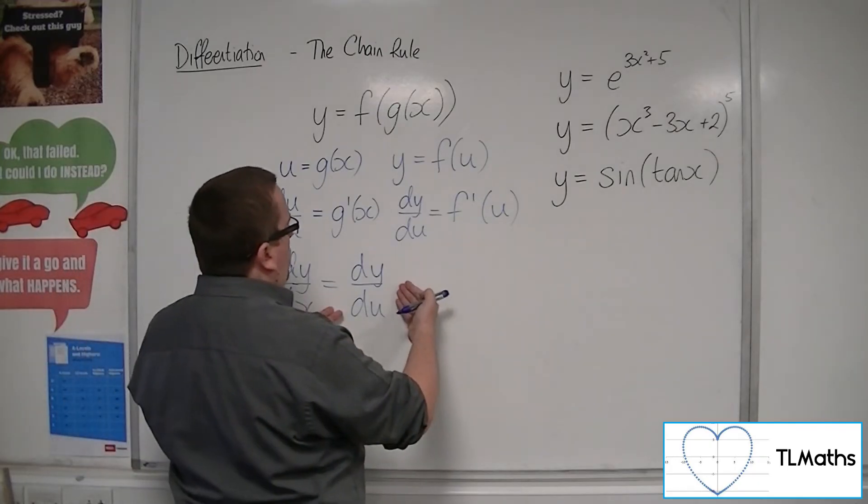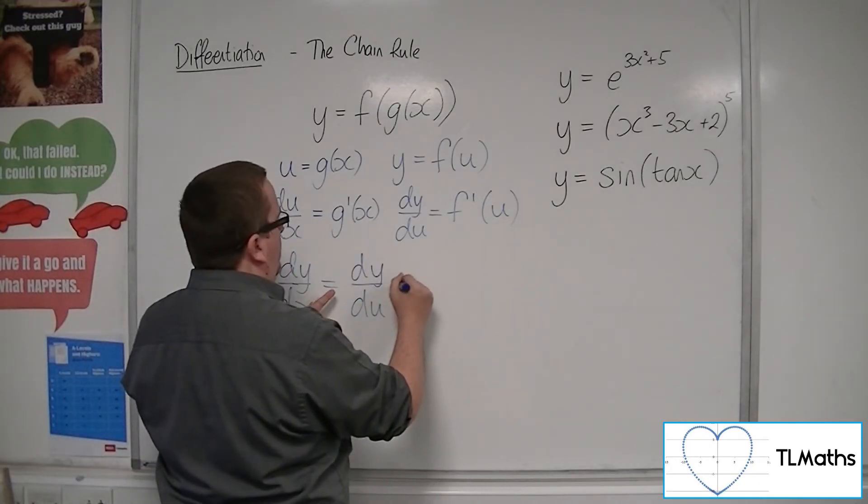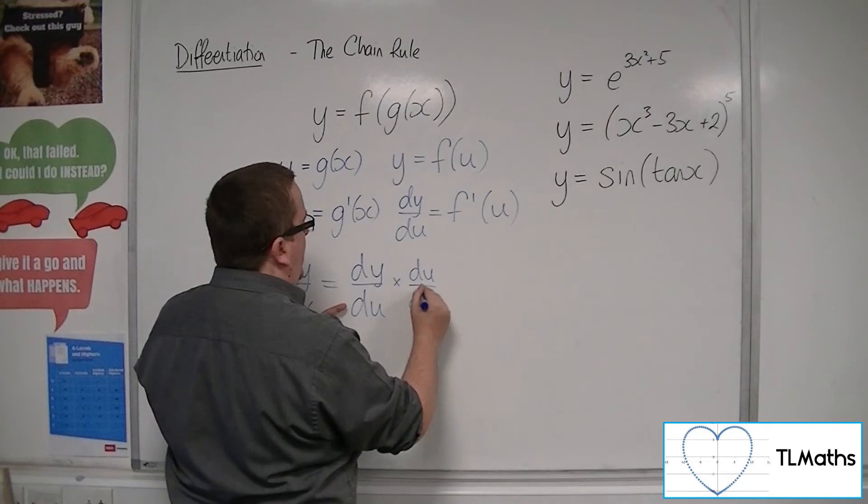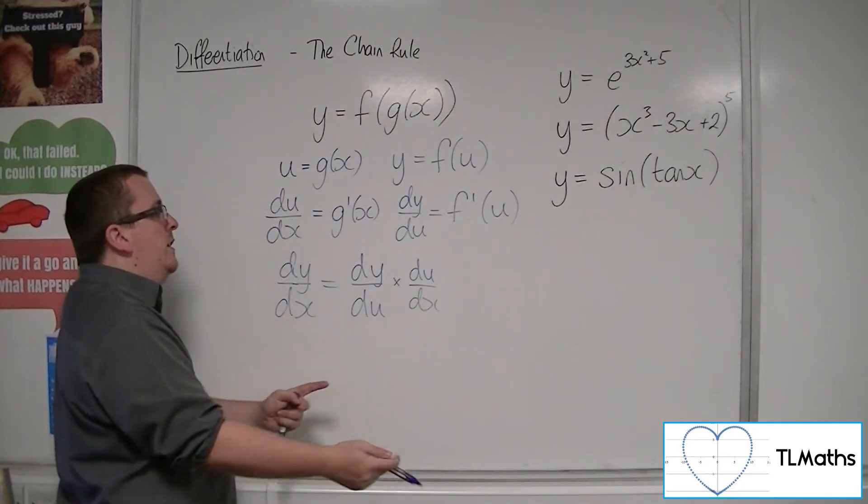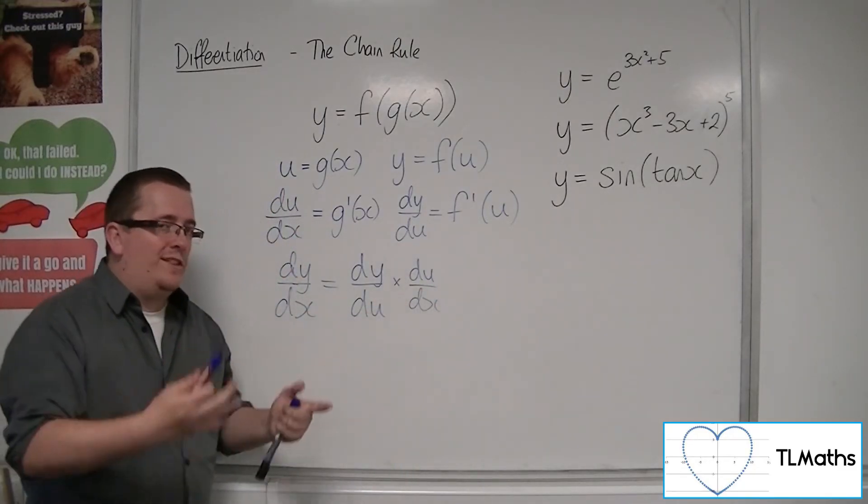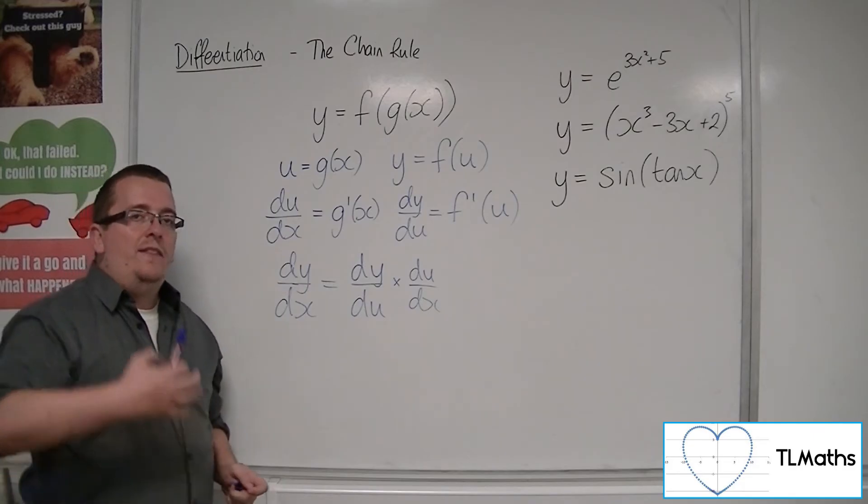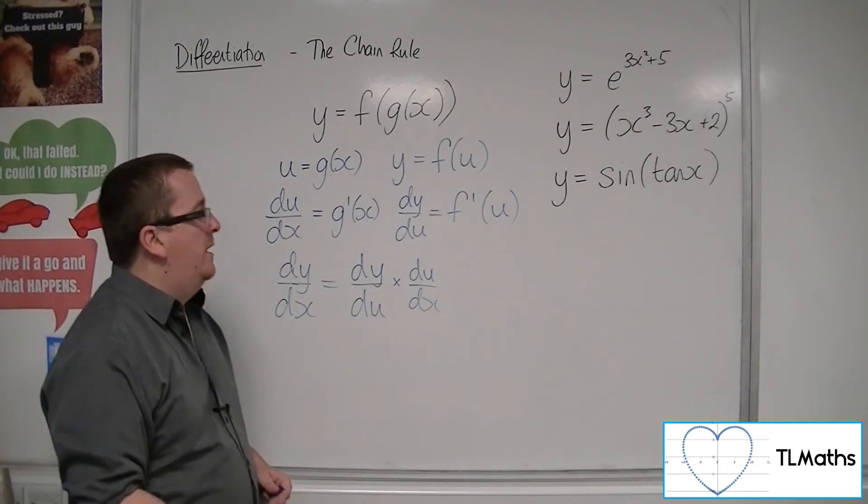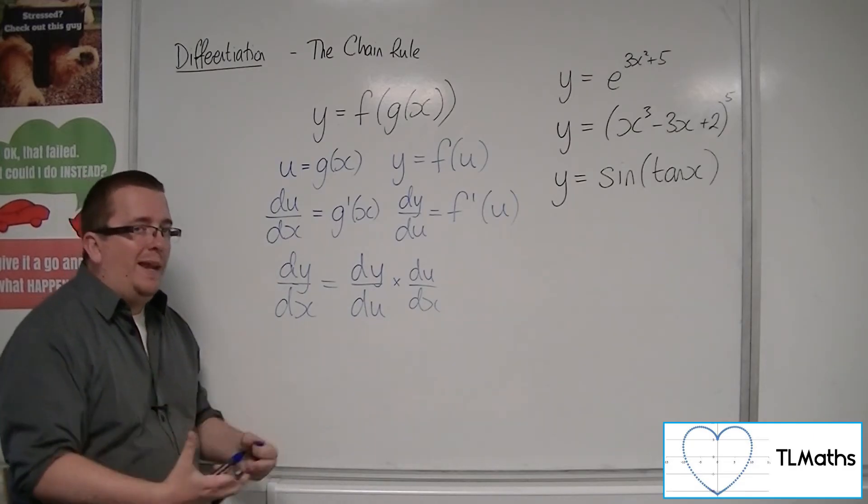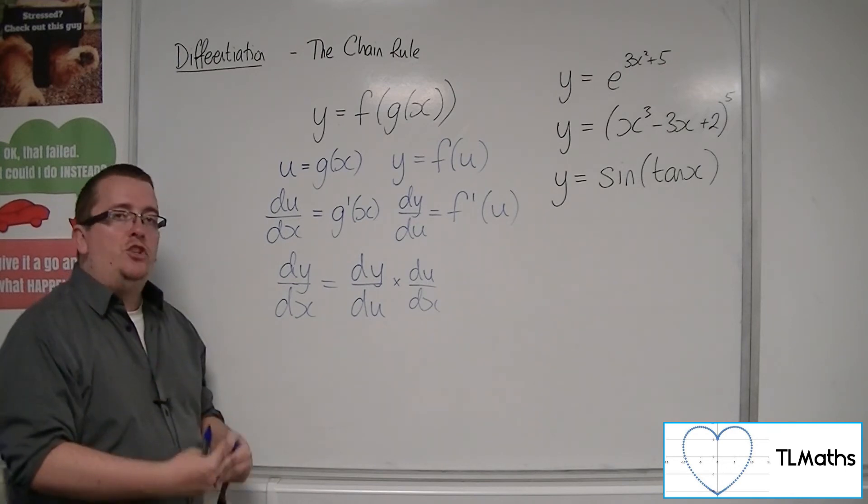And this is one of those cases, because if I write dy by du times du by dx, it's kind of like the du's cancelling each other out. This is a very wishy-washy way of explaining it.